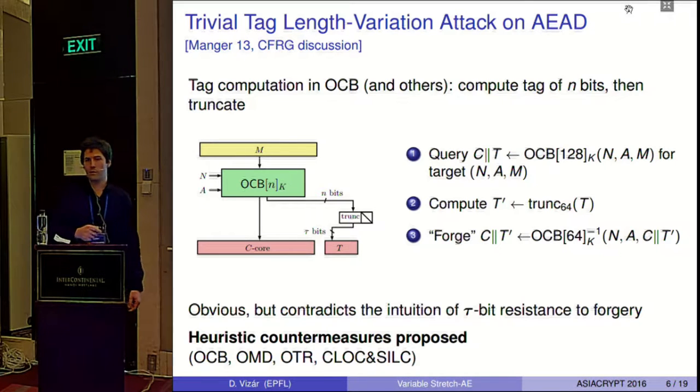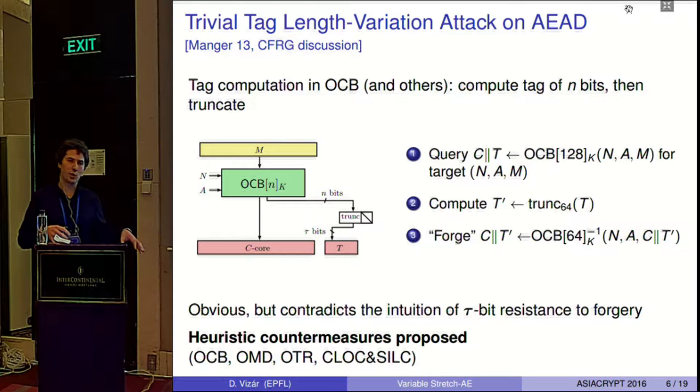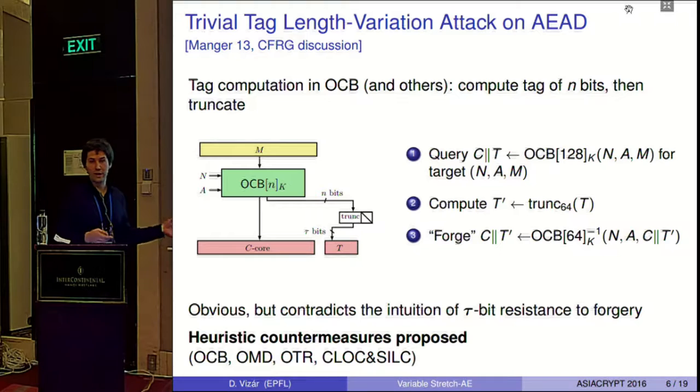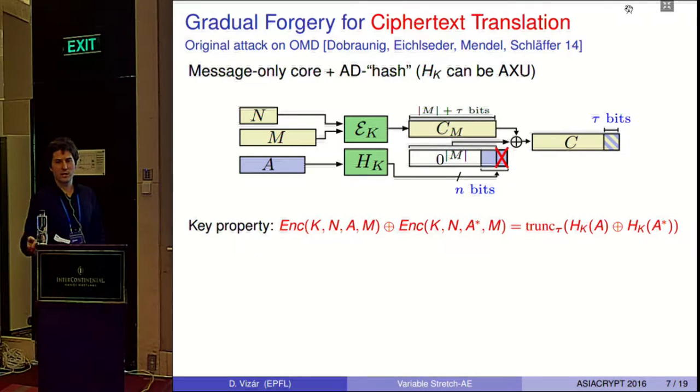Consequently, several algorithms in the CAESAR competition received heuristic tweaks where the tag length had been mixed into the encryption algorithm by dropping it either into the nonce or associated data. But no real analysis was done. And unfortunately, even with these countermeasures in place, most of the schemes will still be vulnerable. Because most of these schemes follow the paradigm of ciphertext translation. It's just a way to take an authenticated encryption scheme which can only process nonce and the message. We have an encryption algorithm which gives us a stretched ciphertext, and we want to authenticate the associated data. We just compute a keyed hash of this associated data of constant length in bits, truncate it to tau bits, and XOR it to the end of the ciphertext.